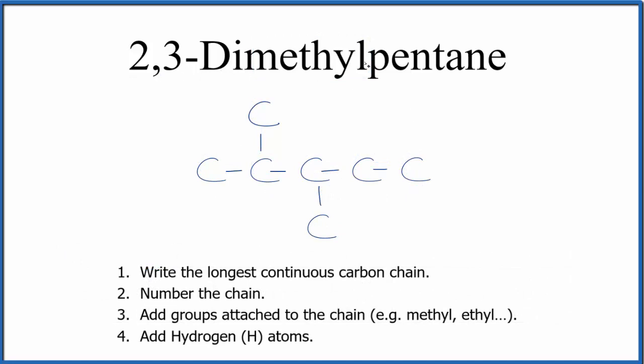So this is the structure for 2,3-dimethylpentane with just the carbons. You can see we have one, two, here's a methyl group. And then on the third carbon, we have another methyl group.